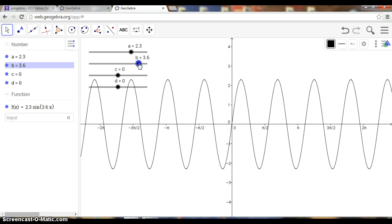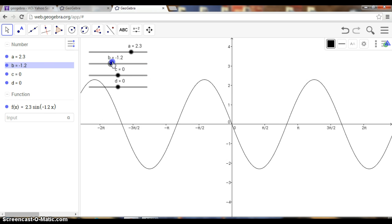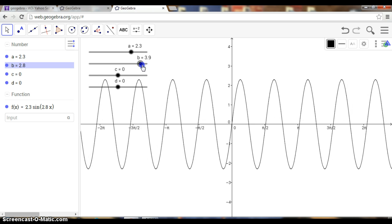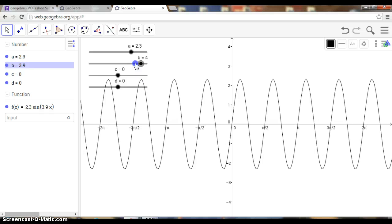If we click on the b value, we can see what it does. This one affects the period of the graph, or how many repetitions we have.